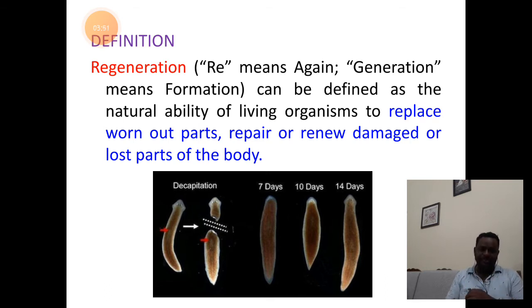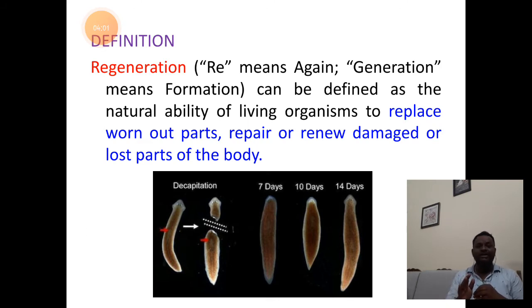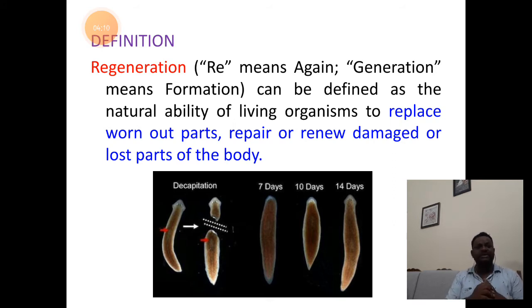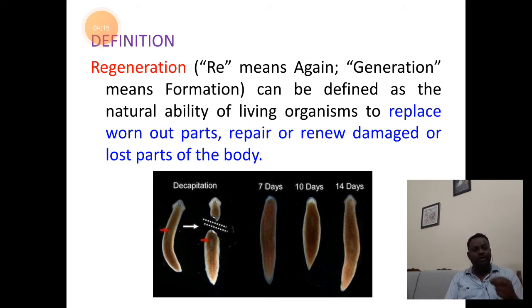The physiology of the organism will not allow the organism to remain under loss or damage for a long time. The lost parts of the body can be regained by the repair mechanism that happens within the body system. This mechanism is generally referred to as the process of regeneration, commonly seen in adult organisms when there is damage or loss of body parts. Regeneration is defined as the natural process of replacement of worn-out parts or removal of damaged or lost parts of the body.